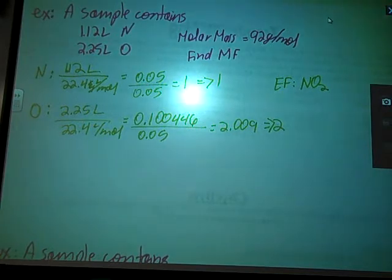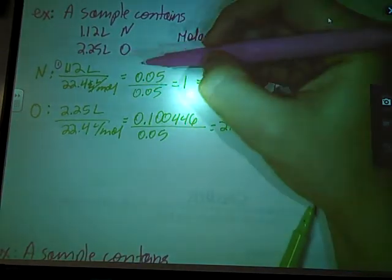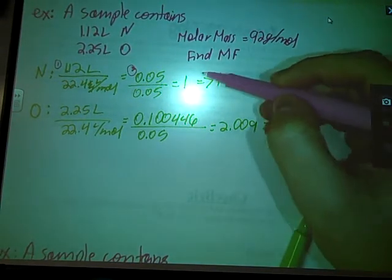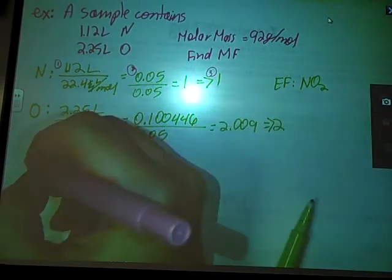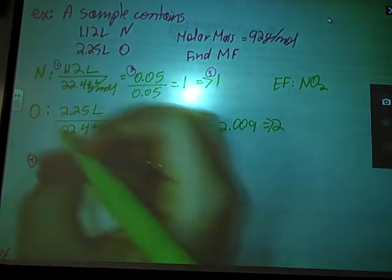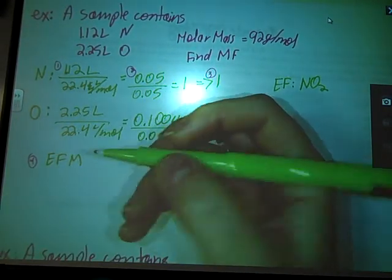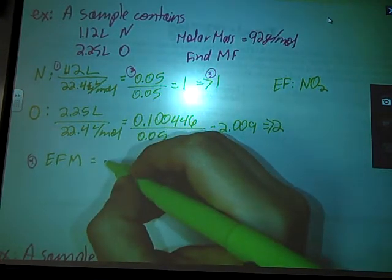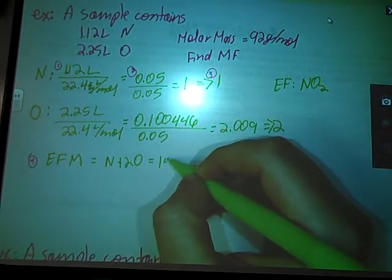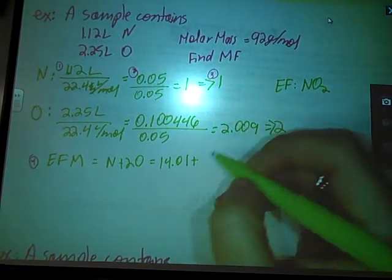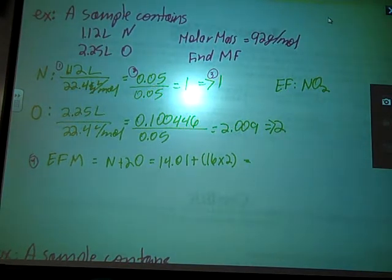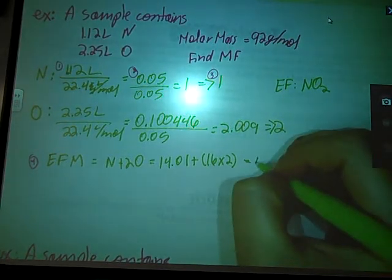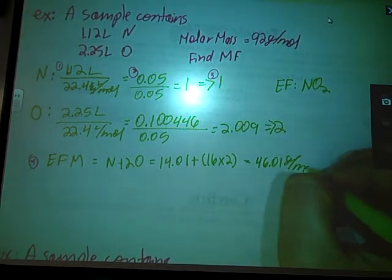Now, we move on to the molecular formula. Just to recap, step one, we converted to moles. Step two, we divided by the smallest. Step three, we rounded reasonably. Now, on to step four. We need to find the empirical formula mass of my NO2. I'm going to add together my nitrogen plus my two oxygens. Nitrogen has a mass of 14.01 plus my two oxygens. Let me plug that into my calculator right quick. Gives me 46.01 grams per mole.